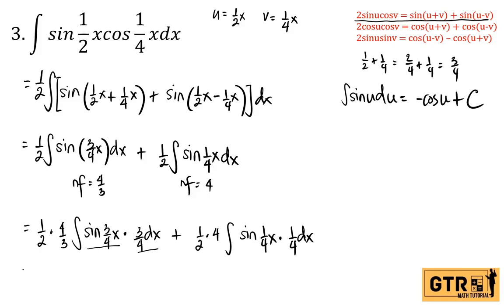Applying the formula — integral of sin(u) du = −cos(u) + C — we get: one half times 4/3 reduces to 2/3, giving −(2/3)cos(¾x). Then one half times 4 equals 2, giving −2 cos(¼x) plus C. Both sine terms produce negative cosine results. This is the final answer for number 3.